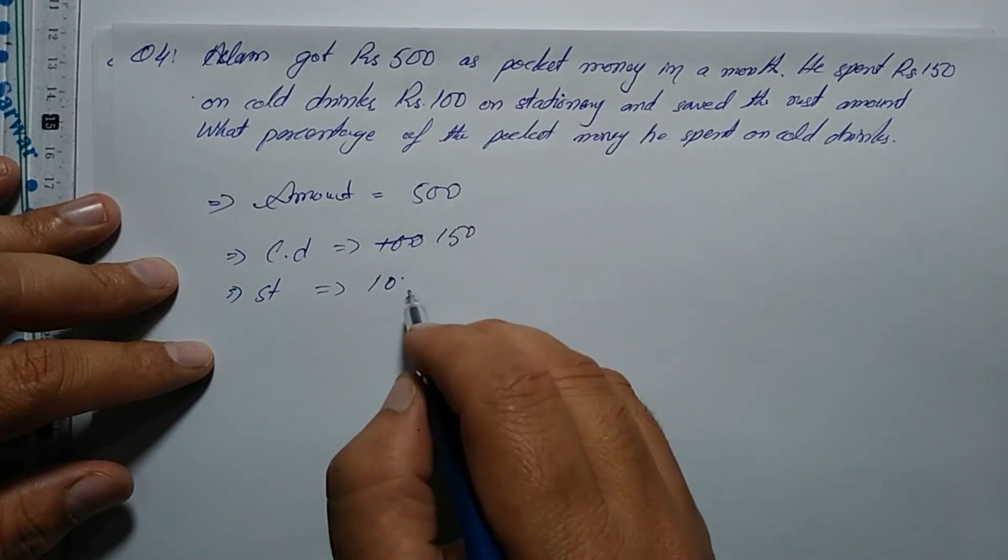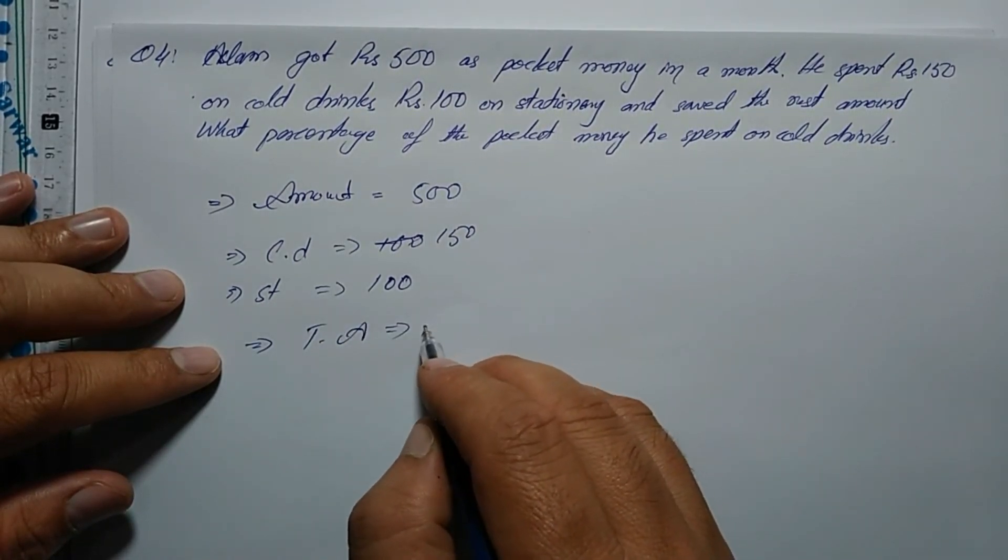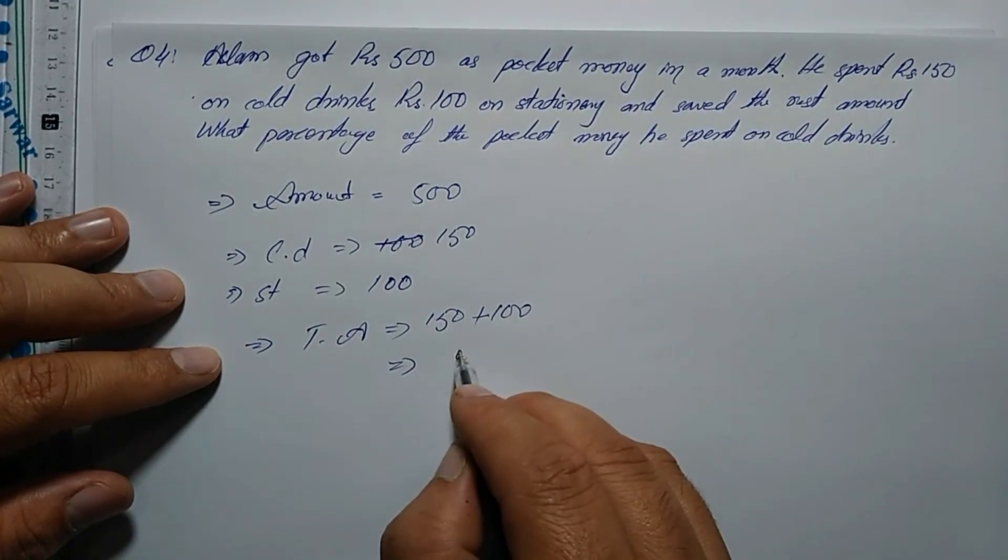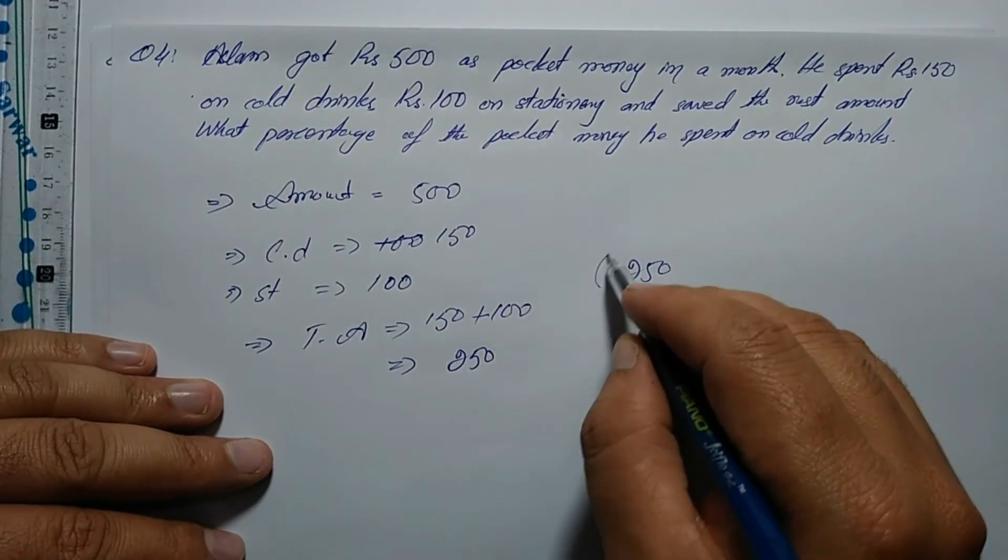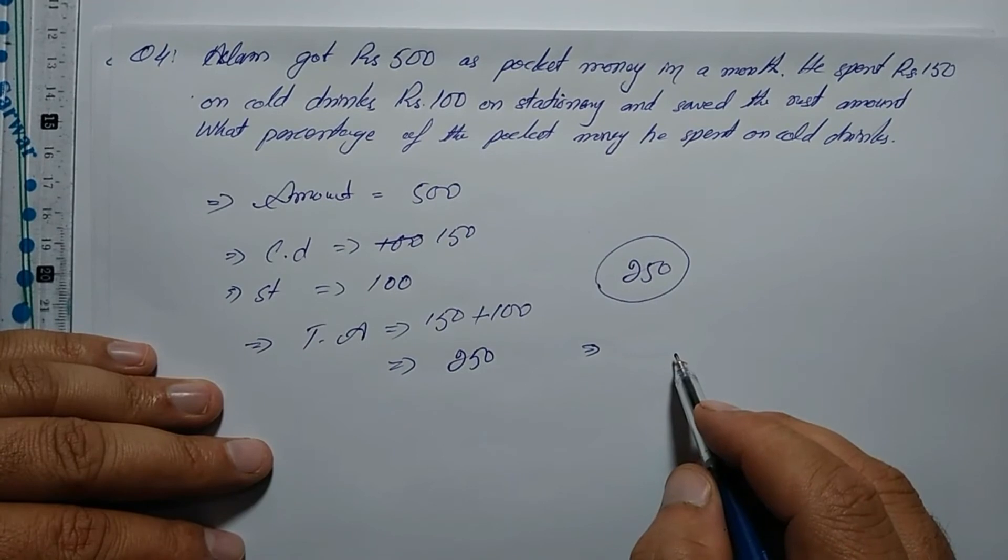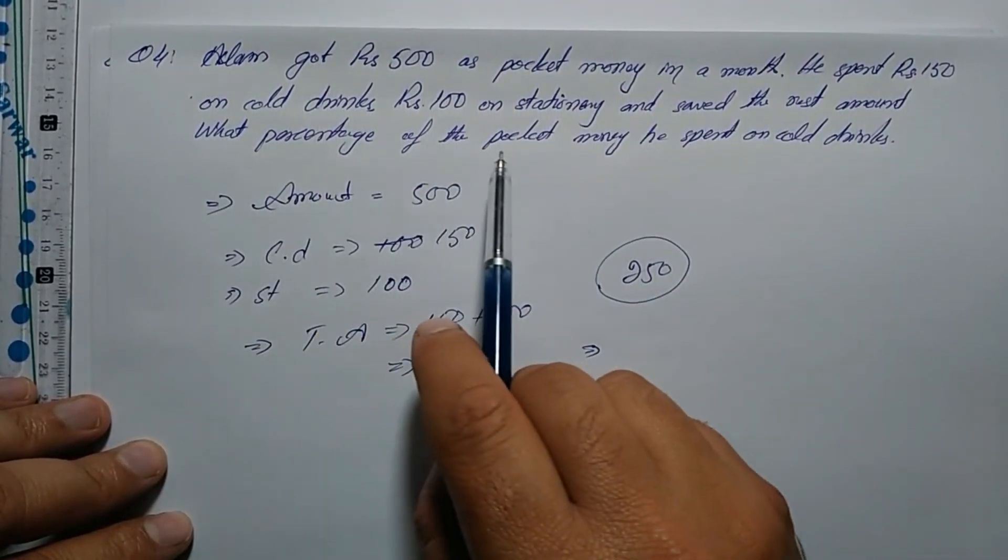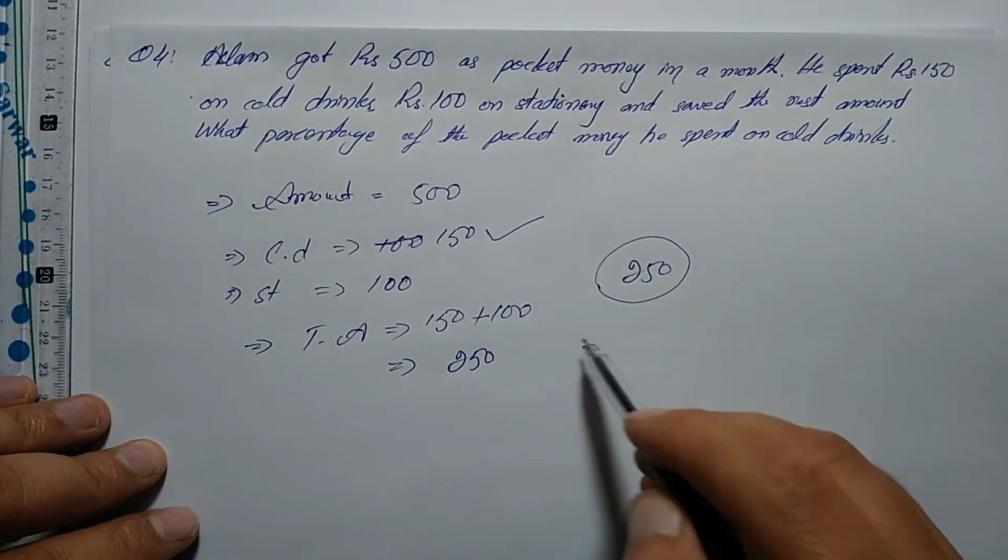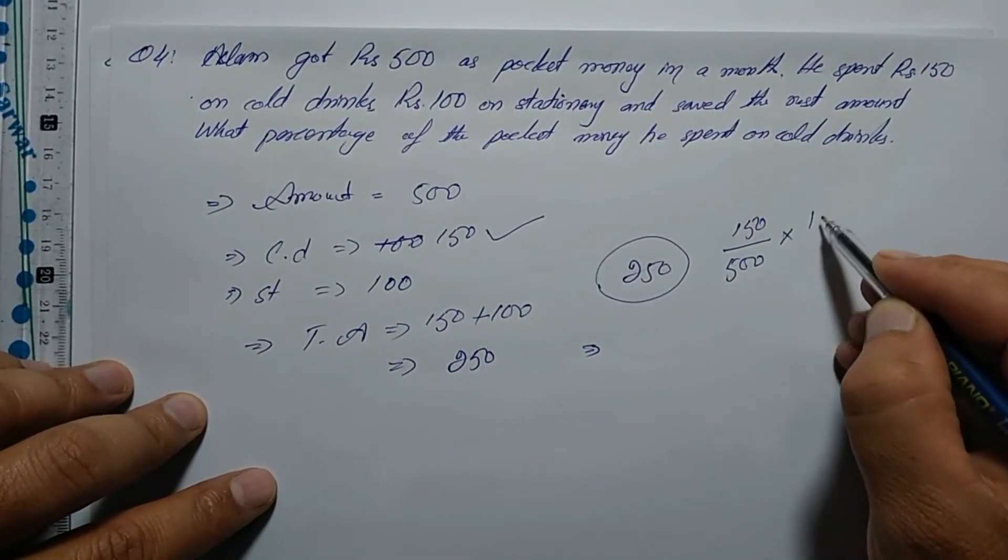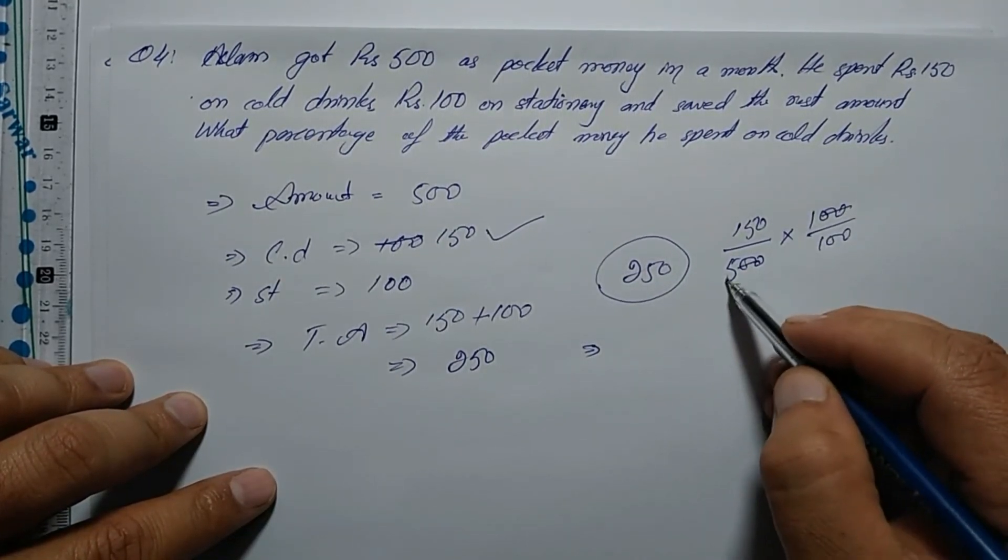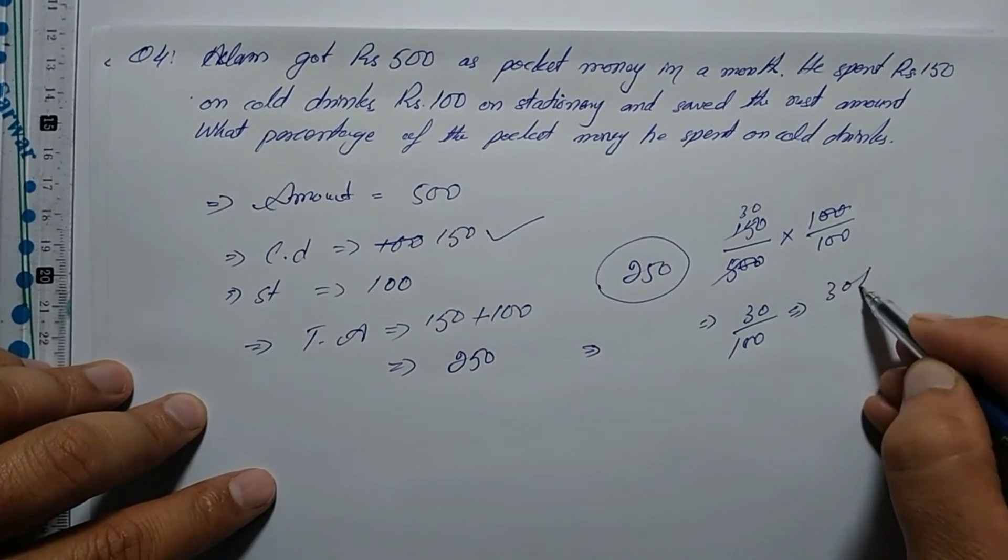He spent 150 plus 100, which equals 250 total expenditure. We need the percentage he spent on call rings. 150 out of 500, multiply by 100 equals 30 over 100, which is 30 percent.